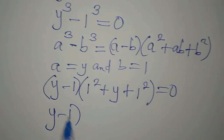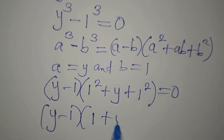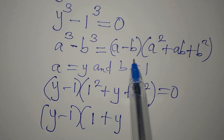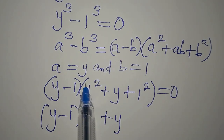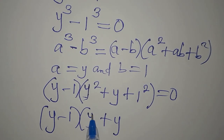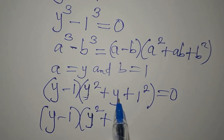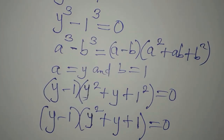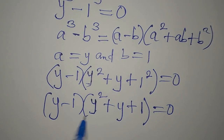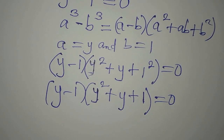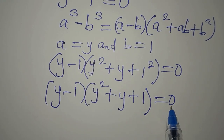Now y minus 1 times — wait, we've made a mistake. It's supposed to be a is y, so y squared gives us y squared, then plus y, plus 1 squared gives 1. So this is equal to zero. By the way, did you see this mistake before? If you saw it, that's good.